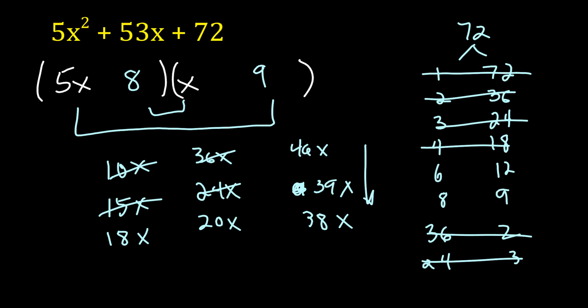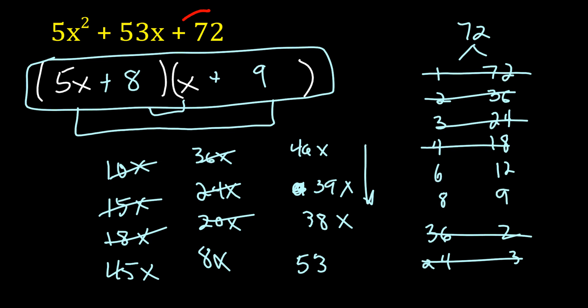So if we do that, we've got 5x times 9 is 45x. 8 times x is 8x. 45 plus 8 is 53. And that's what we're looking for. So we've got 5x plus 8 and x plus 9. So as you notice, when this number that I'm circling in red here, that's 72, as that one gets to have a lot of factors, it can really complicate matters quite a bit because there's a lot of different things to check. And that's where you've got to use your brain to eliminate a couple of the more obvious, not correct ones.